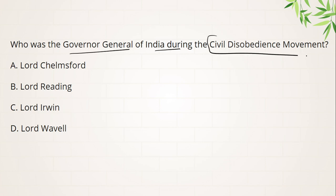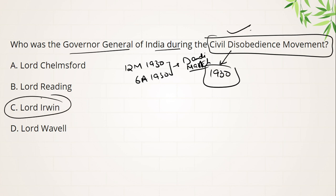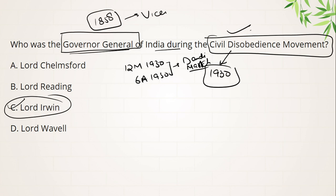Next question — who was the Governor General of India during the civil disobedience movement? Civil disobedience movement start hoti hai 1930 mein. If you remember the date: from 12th March 1930 to 6th April 1930, Gandhi ji ne chalaya Dandi March, and that marked the beginning of the civil disobedience movement. Note that after 1858, Governor General and Viceroy were the same term. Lord Irwin was the Governor General of India at the time of the civil disobedience movement.